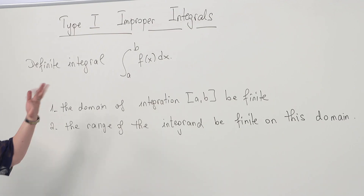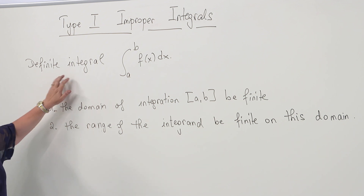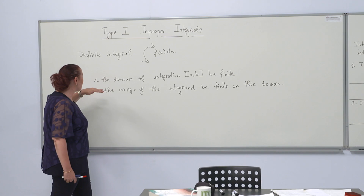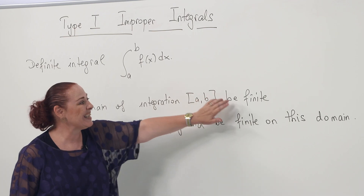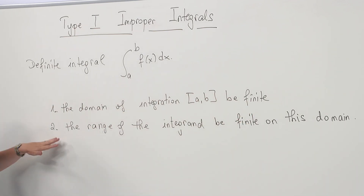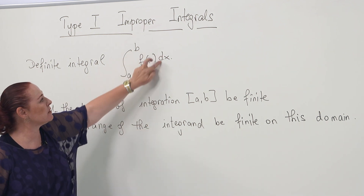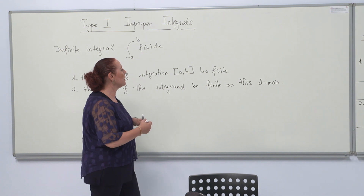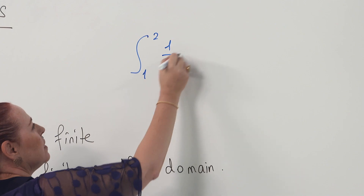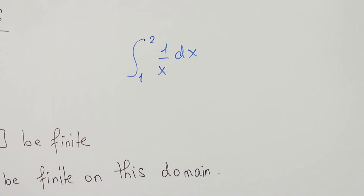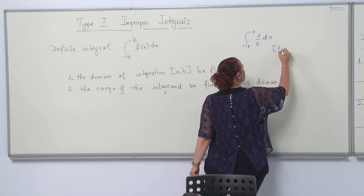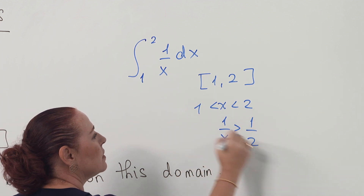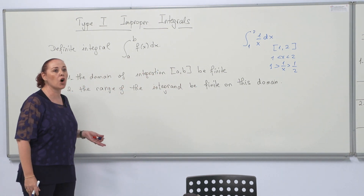In order to understand improper integrals, first let's remember what a definite integral is. A definite integral is an integral from a to b of f of x dx, where the domain of integration a to b is finite and the range of the integrand is also finite on this domain. For example, the integral from 1 to 2 of 1 over x dx is a definite integral: the domain is from 1 to 2, which is finite, and the range on this domain is from 1 to 1/2, which is also finite.